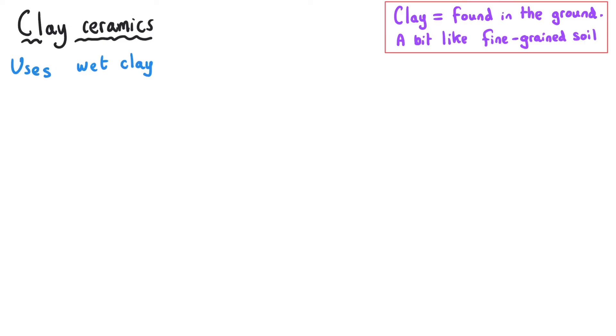When somebody mentions ceramics they're normally talking about clay ceramics and as the name suggests clay ceramics are made from the raw material of clay. What you do is you take some clay which is dug up from the ground and we shape it while it is wet.